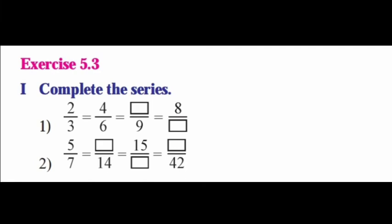Let's see exercise 5.3. Main 1: Complete the series. First: 2/3 — 2 times 2 is 4, 3 times 2 is 6; next: 2 times 3 is 6, 3 times 3 is 9; next: 2 times 4 is 8, 3 times 4 is 12. Second: 5/7 — 5 times 2 is 10, 7 times 2 is 14; 5 times 3 is 15, 7 times 3 is 21; 7 times 6 is 42, so 5 times 6 is 30.